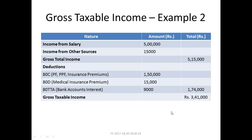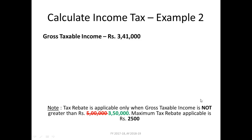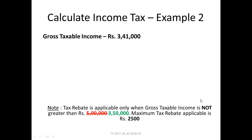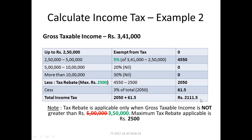Let's look at the second example. Suppose the income from salary is five lakhs and income from other sources is fifteen thousand, giving a total of five lakh fifteen thousand. After deductions of one lakh seventy-four thousand, the gross taxable income is three lakh forty-one thousand. One might think ten percent of three lakh forty-one thousand is thirty-four thousand one hundred, but that is not the correct process.